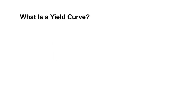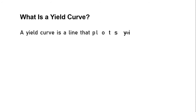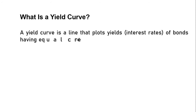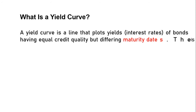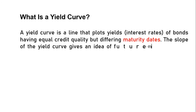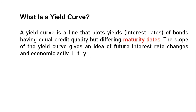Let's start with yield curve. A yield curve is a line that plots yields of bonds having equal credit quality but differing maturities. The slope of the yield curve gives an idea of future interest rate changes and economic activity.